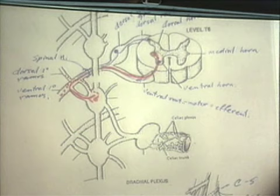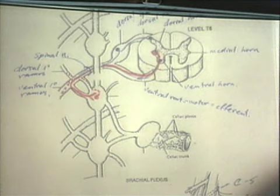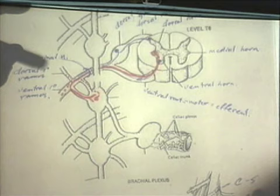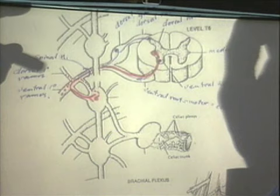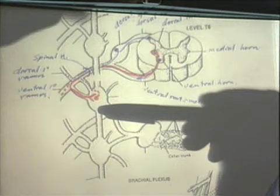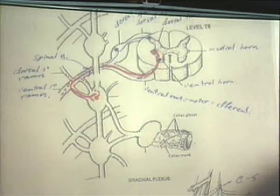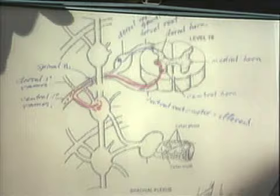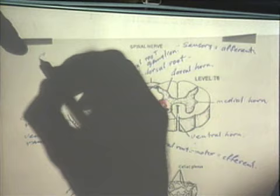In the thoracic area, this system supplies blood vessels and thoracic structures. In the head and neck area, what concerns us is an extension of this system upward into the neck — this is the sympathetic trunk. At the cervical level, this becomes the cervical sympathetic trunk.